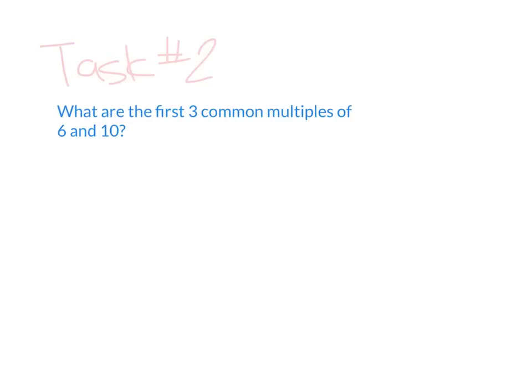Let's go to task number 2: what are the first 3 common multiples of 6 and 10? So now I'm giving you 2 numbers, and you're looking for the first 3 common multiples — so you're going to keep going until you get all 3. Go ahead and pause your video and come back when you're ready.